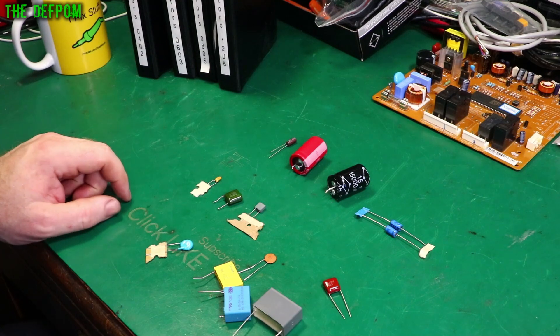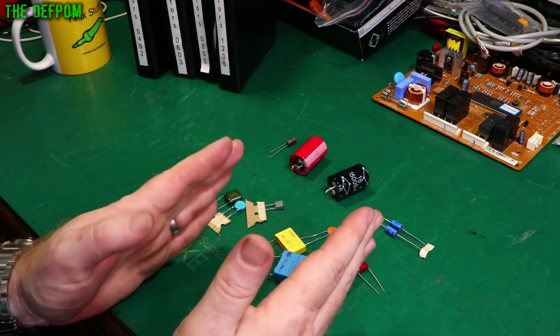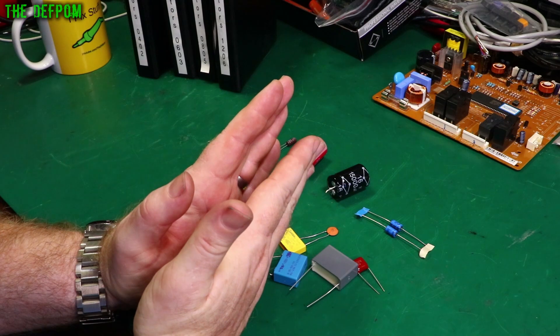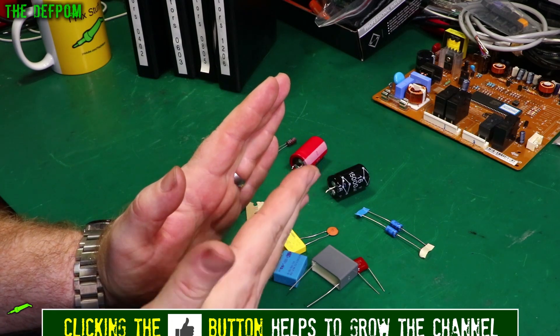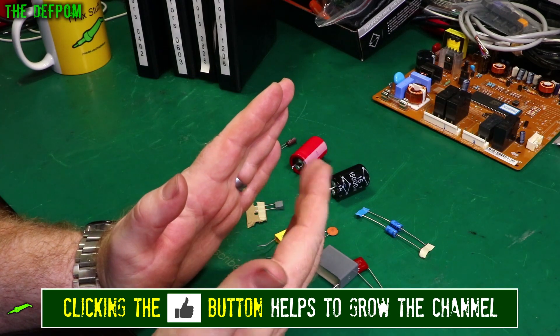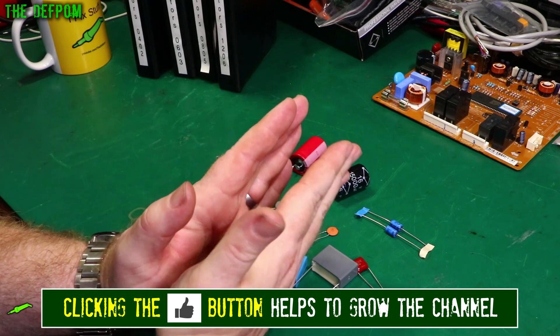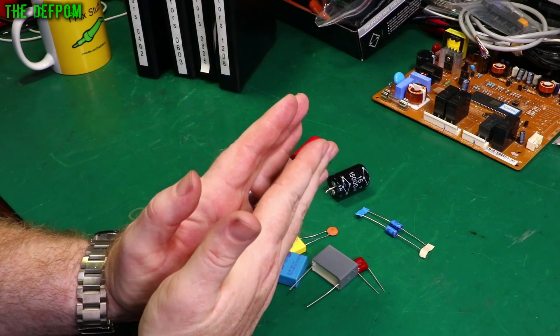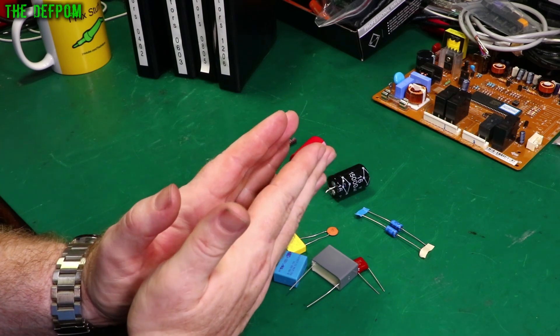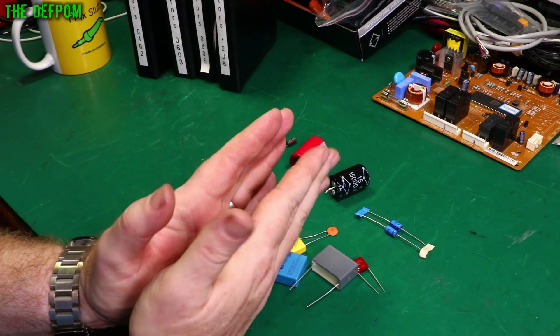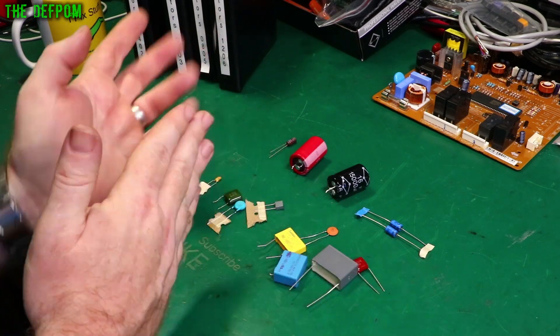I should actually tell you what a capacitor basically is. It's basically two plates which are not touching but close together. If there's a plot of voltage on one side, it will induce a voltage on the other side. It acts a bit like a battery. They hold a charge like a battery does.